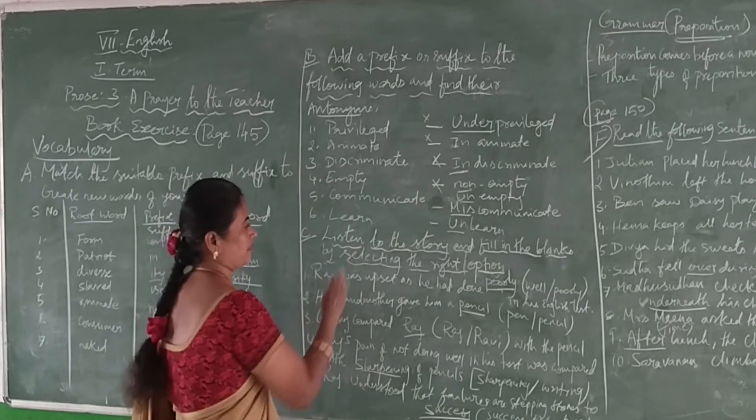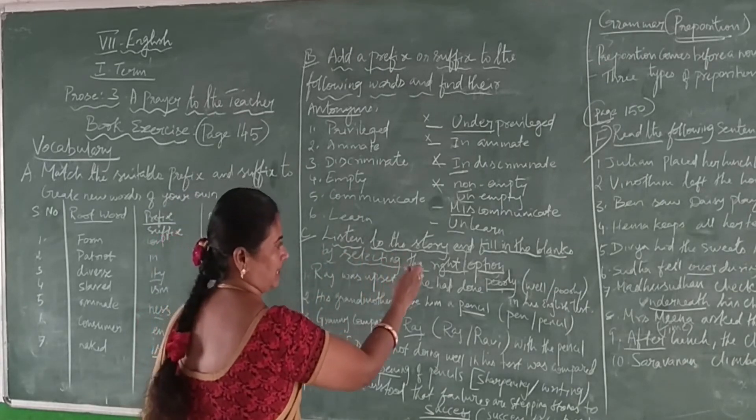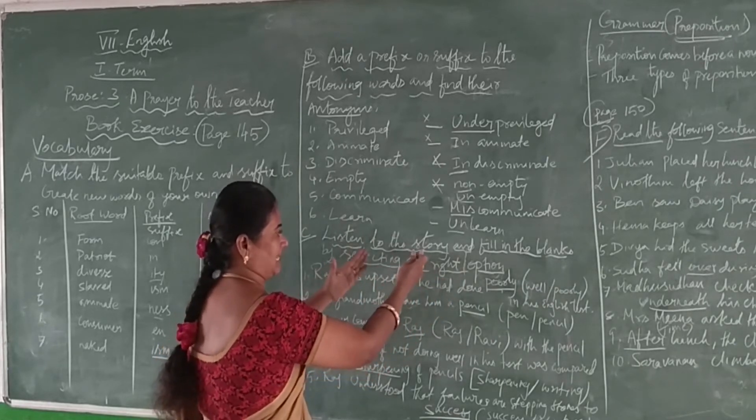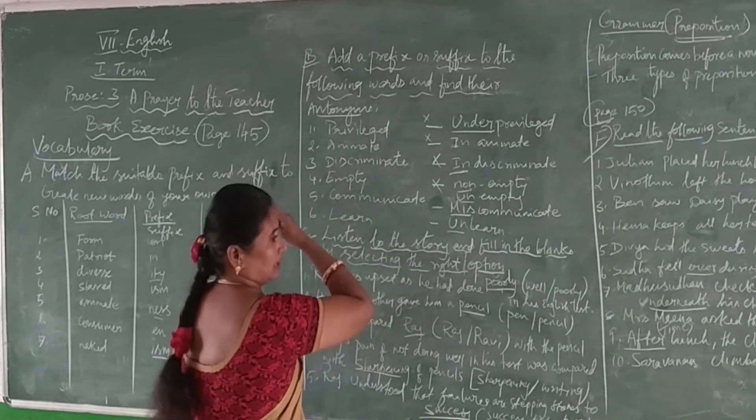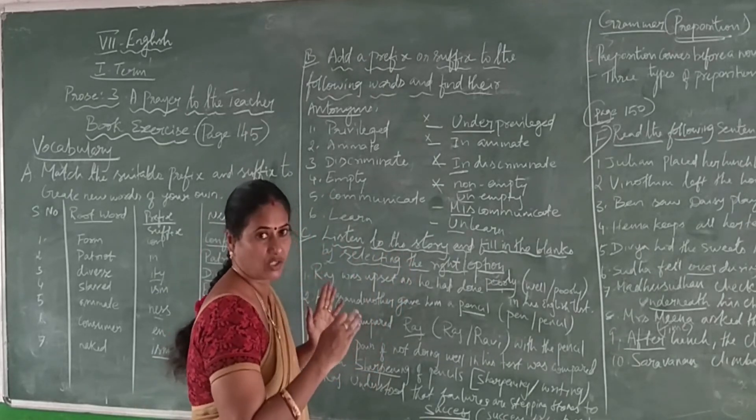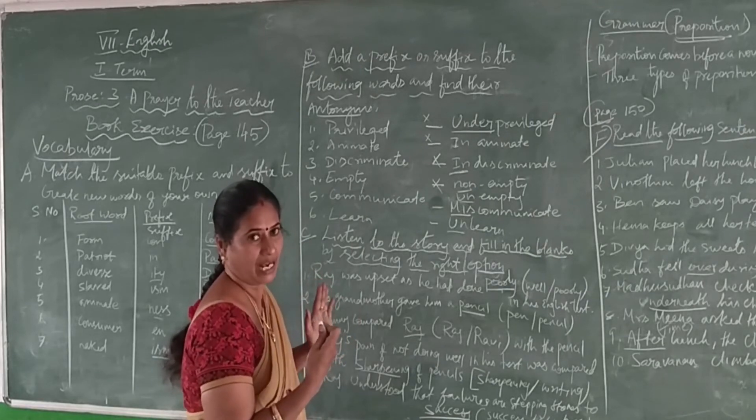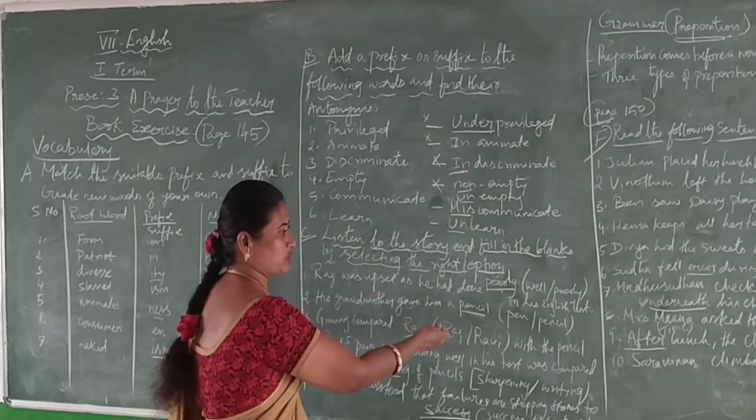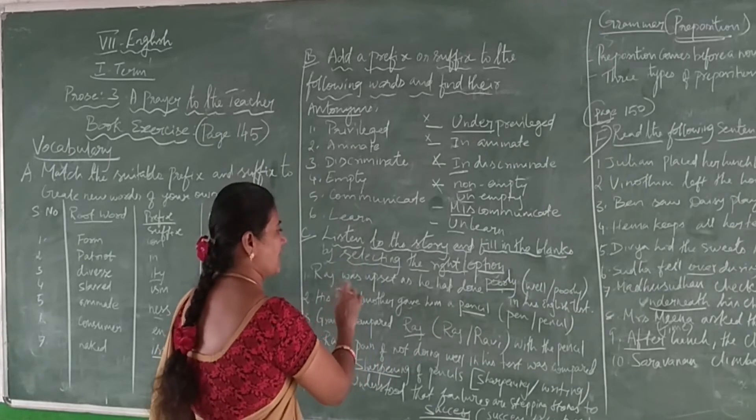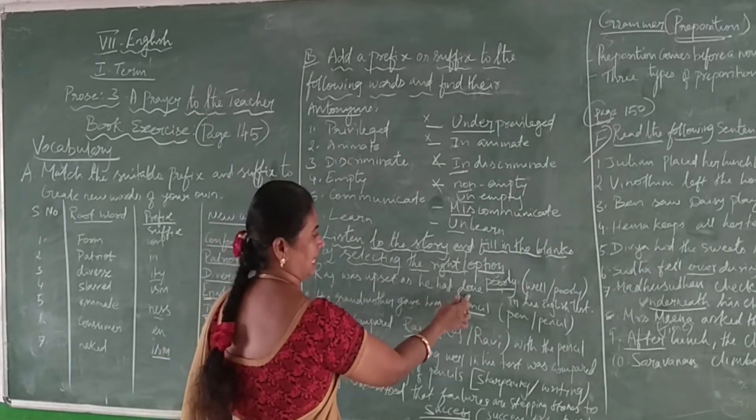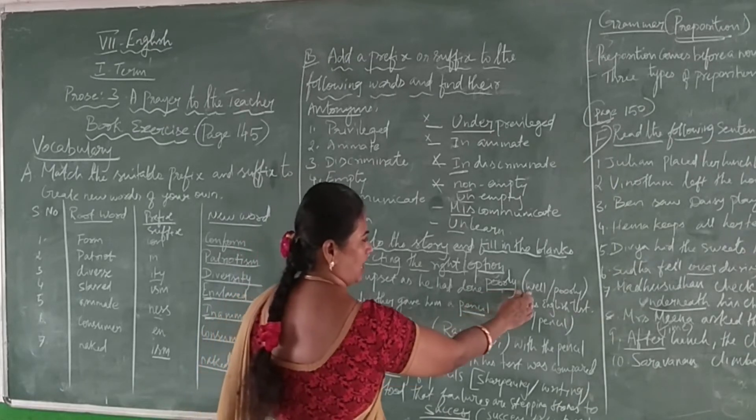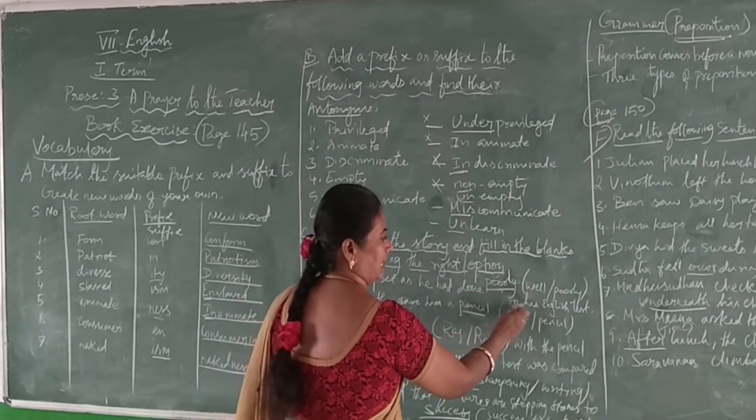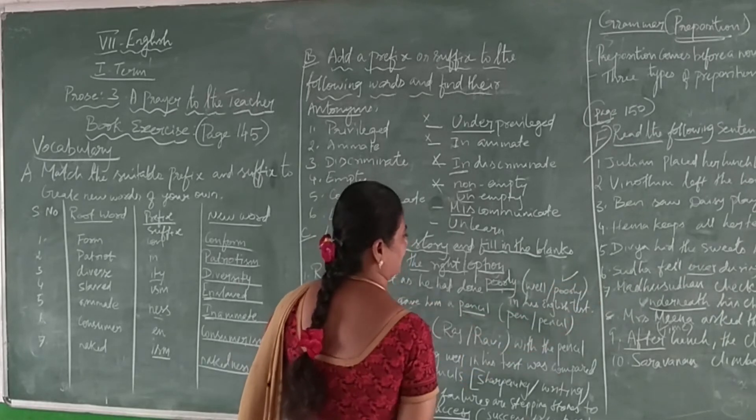Now next part: listen to the story and fill the blanks by selecting the right option. You have to work with the lesson story that you have learned through the video online program. If you understand the story, then it will be easy for you to write the answer for this. Rauch was upset as he had the blank. That is, 'acted poorly'.